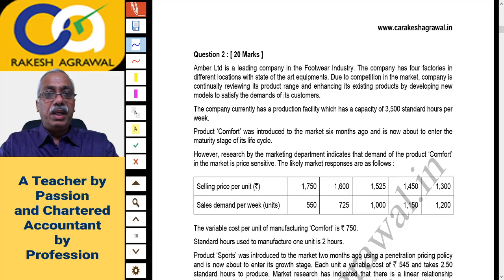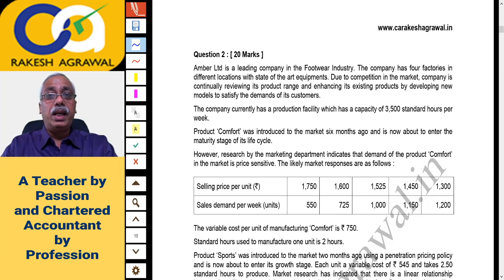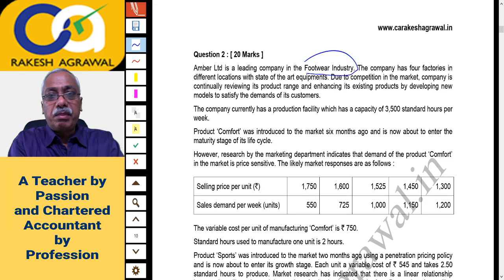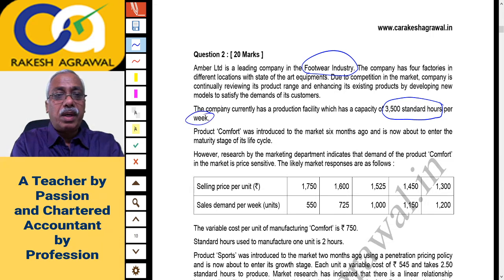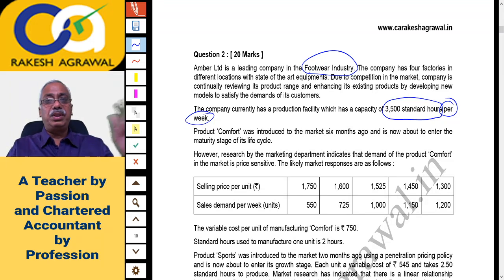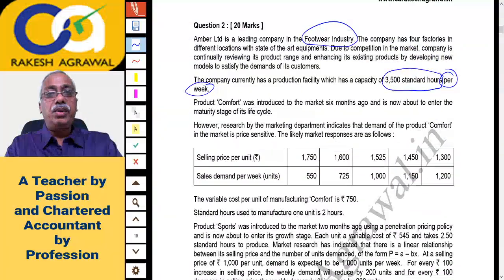Question 2: Umber Limited is a leading company in the footwear industry. The company has four factories in different locations with state-of-the-art equipment. Due to competition, the company is continually reviewing its product range and enhancing products by developing new models. The company currently has a production facility with a capacity of 3,500 standard hours per week — this is the key constraint. Product Comfort was introduced in the market six months ago.